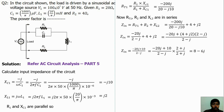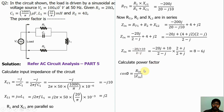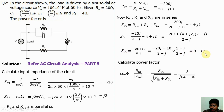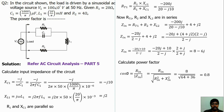Now the input impedance calculation is complete. We have to find the power factor. Power factor equals R_in divided by |Z_in|, where |Z_in| equals the square root of R_in squared plus X_in squared. For Z equals 8 minus 6j, R_in equals 8 and X_in equals 6. So R_in squared is 64, X_in squared is 36. Simplifying, we get power factor equal to 0.8. This is the answer.